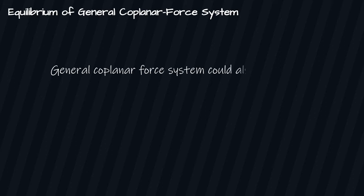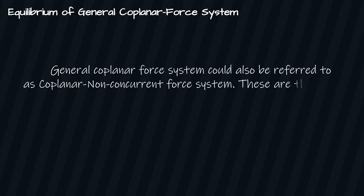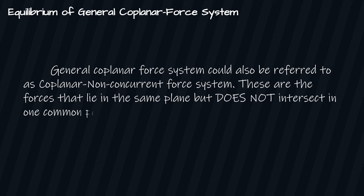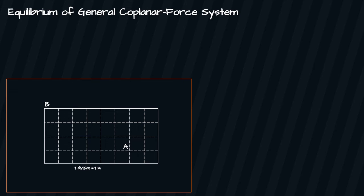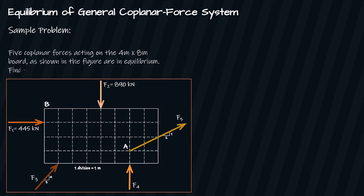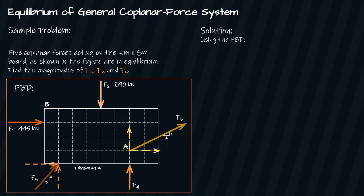A general coplanar force system — also referred to as a coplanar non-concurrent force system — consists of forces that lie in the same plane but do not intersect at one common point. For our example: five coplanar forces act on a four-meter by eight-meter board as shown. Find the magnitudes of F3, F4, and F5. To solve this type of problem, we draw the free body diagram, then sum up all the moments at point A.